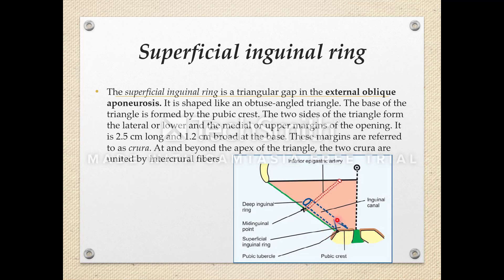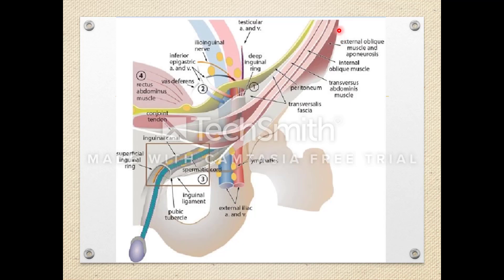The margins of the superficial inguinal ring are called crura. At or beyond the apex of the triangle, the two crura are united by intercural fibers. Summary: it is a triangular gap, present in the external oblique aponeurosis, is an obtuse-angle triangle with a base at the pubic crest and two limbs — upper/medial and lower/lateral — united by intercural fibers.